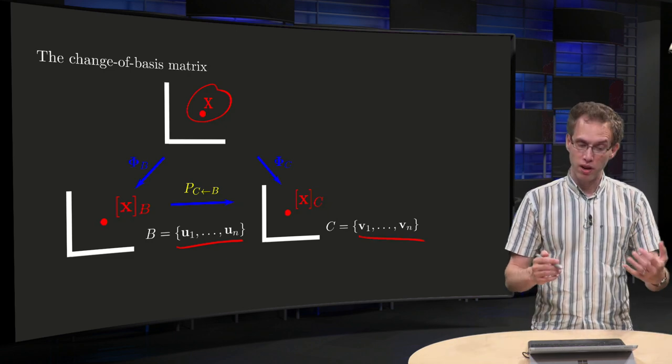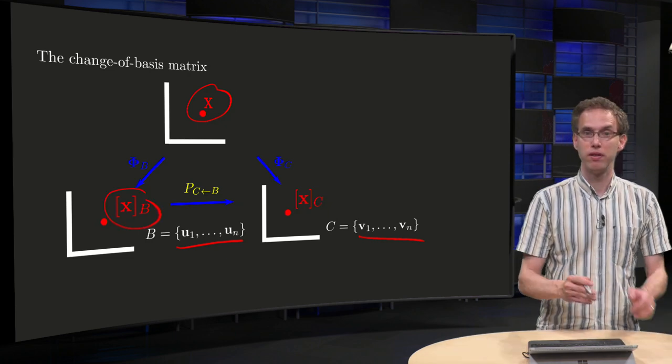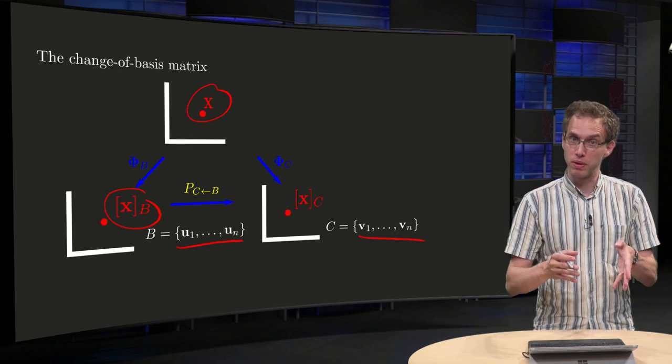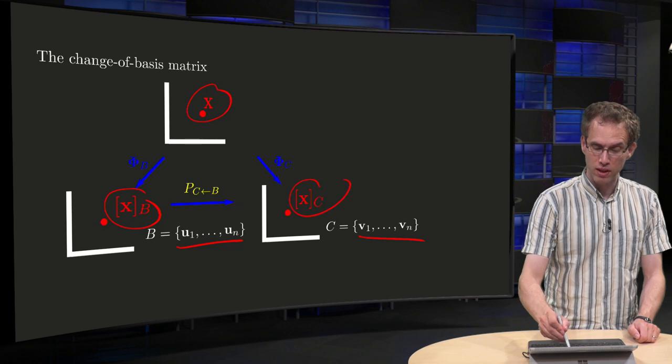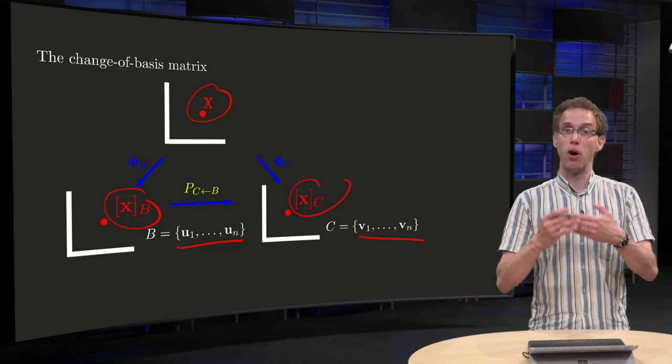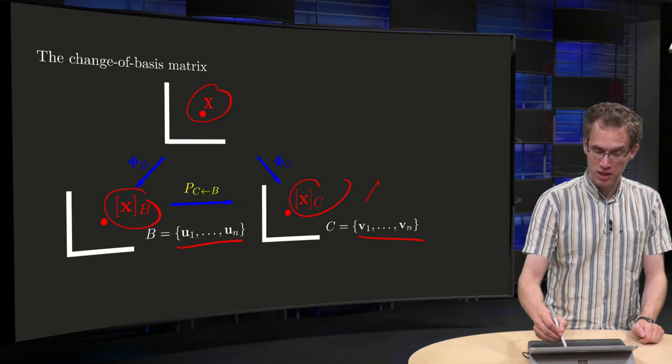And that means that our vector x has two coordinate vectors: an x_B, a vector in R^n, the coordinates with respect to the basis B, and the coordinate vector x_C, also a normal vector in R^n, but now containing the weights with respect to the basis C.